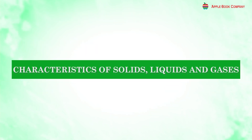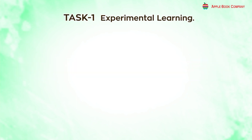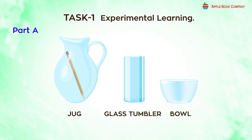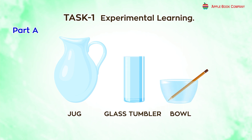Characteristics of Solids, Liquids, and Gases. Task 1, Part A: Take three containers of different sizes — you can take a jug, glass tumbler, and bowl. Take a pencil and keep it in the jug. From the jug, transfer it into the glass tumbler. Then transfer the pencil from the glass tumbler to the bowl. Does the pencil change its shape as it is transferred from one container to another?